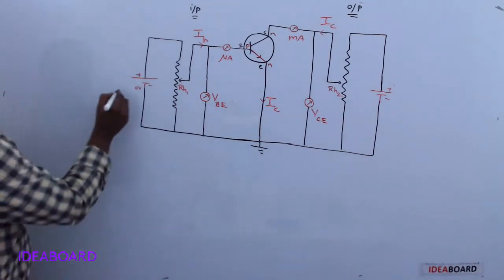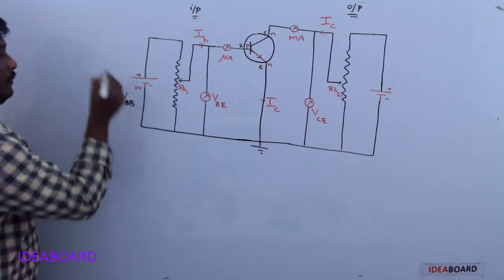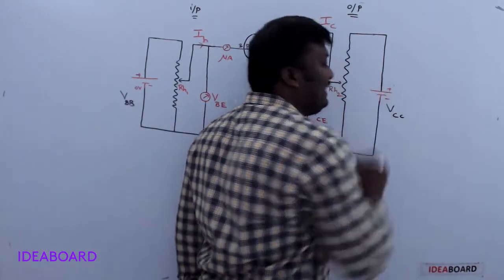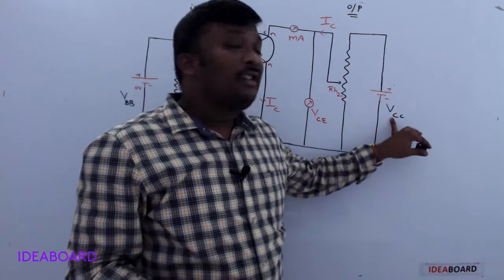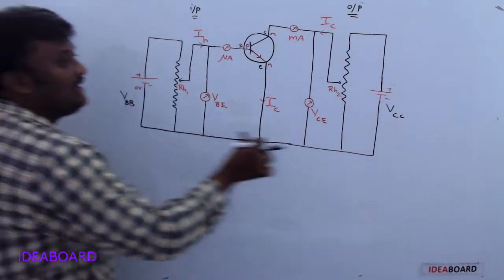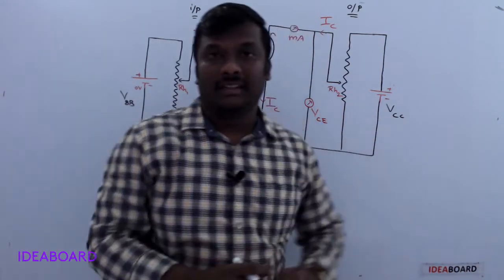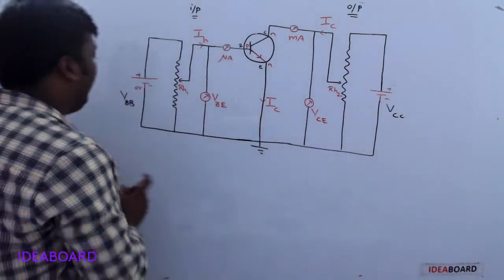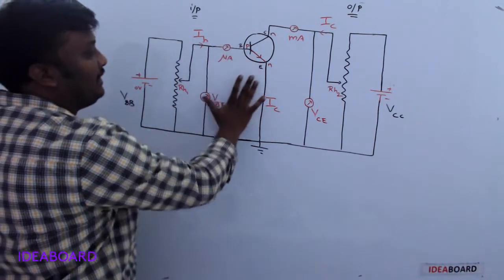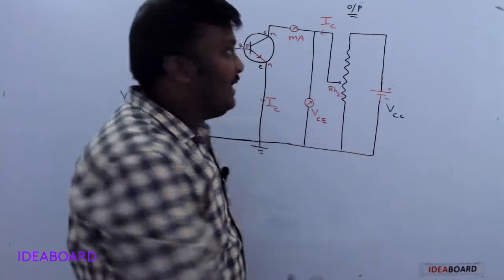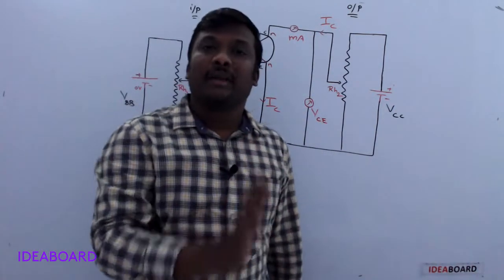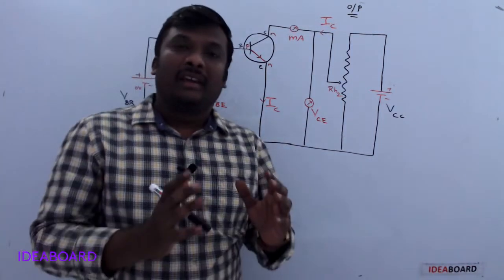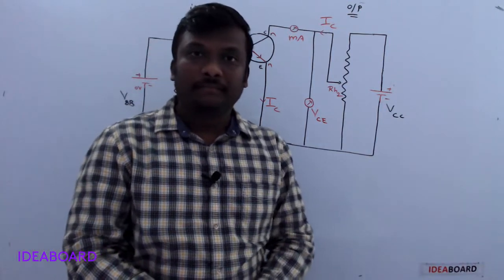This voltage is named VBB — base source voltage. The other voltage is named VCC — collector source voltage. Both are required to activate the transistor. VBB maintains the base-emitter junction in forward bias, and VCC maintains the collector-emitter junction in reverse bias.